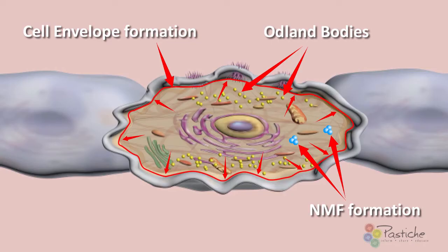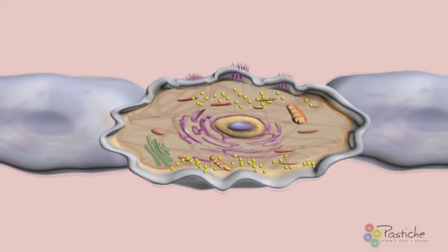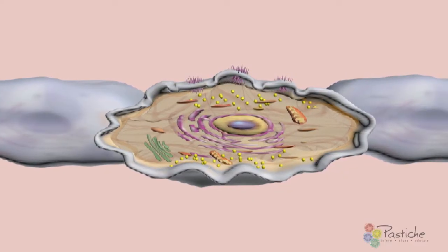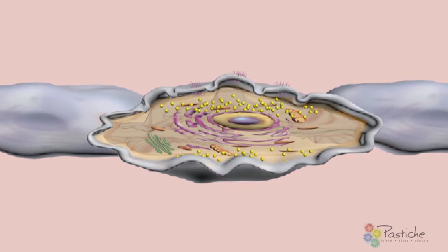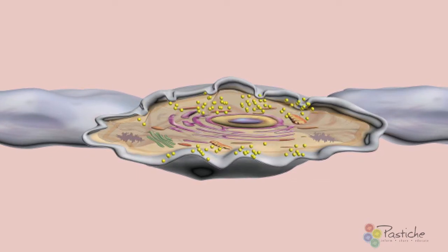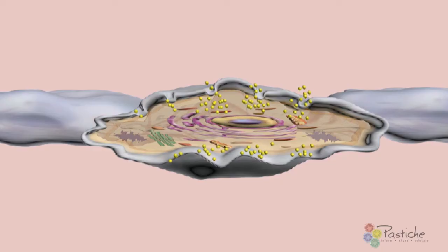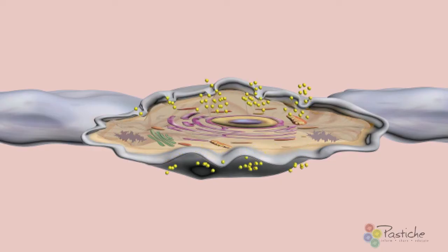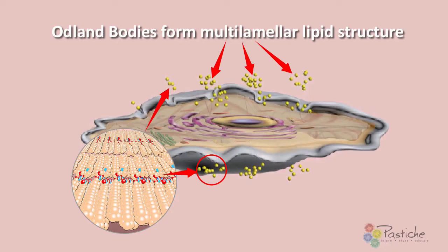It is here that other changes occur within the granular layer that contribute to the skin barrier defence systems. These are the formation of Odland bodies and the natural moisturising factor. In the transitional phase, the Odland bodies are released to form a multilamellar lipid structure with the cornified shell of the corneocyte. Together, the cornified cell envelope and the multilamellar lipids become essential components of effective physical and water barrier functions in the skin by slowing transepidermal water loss.